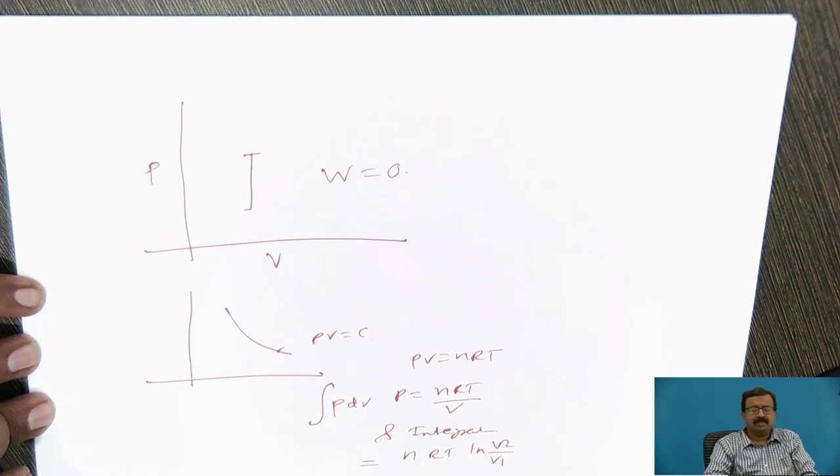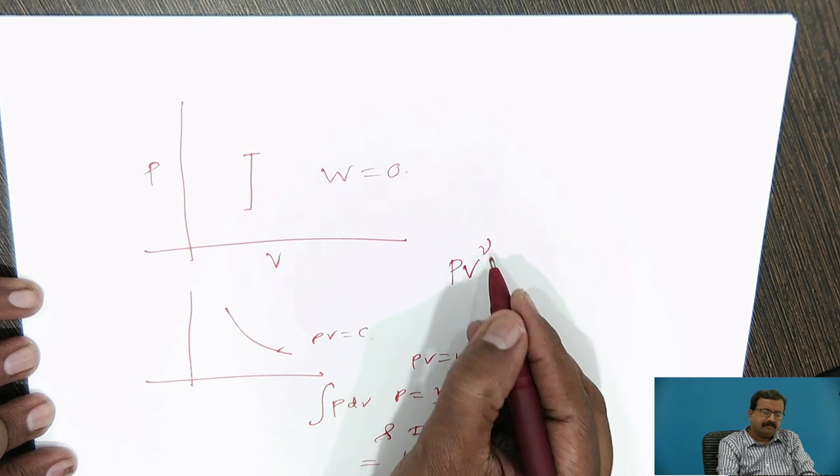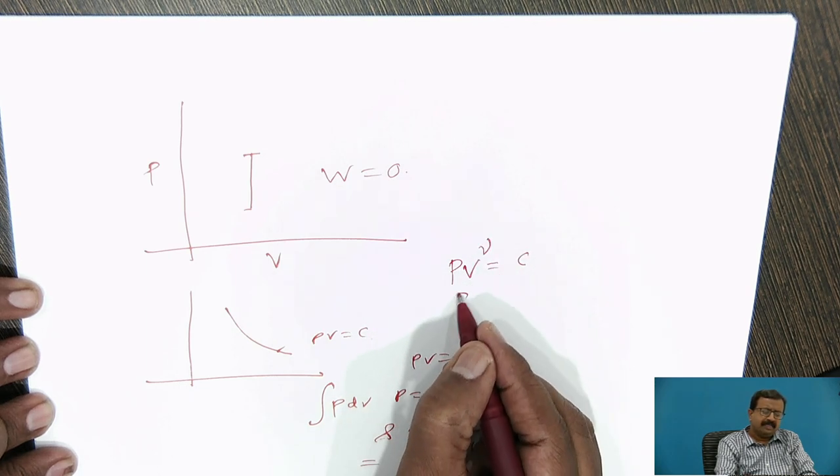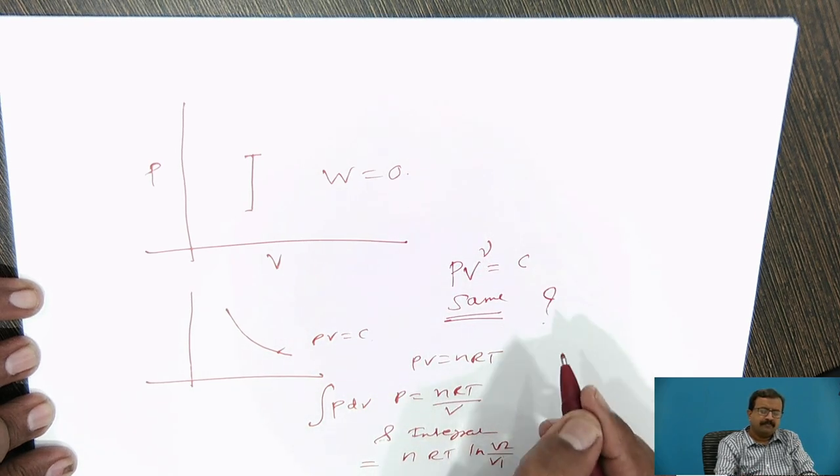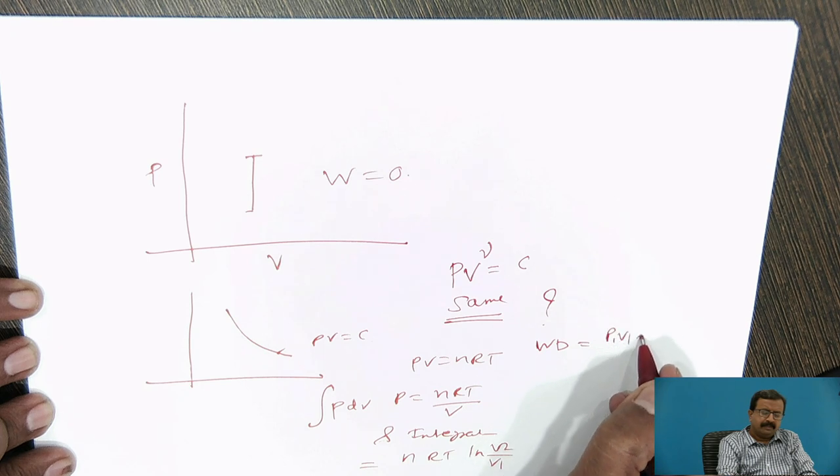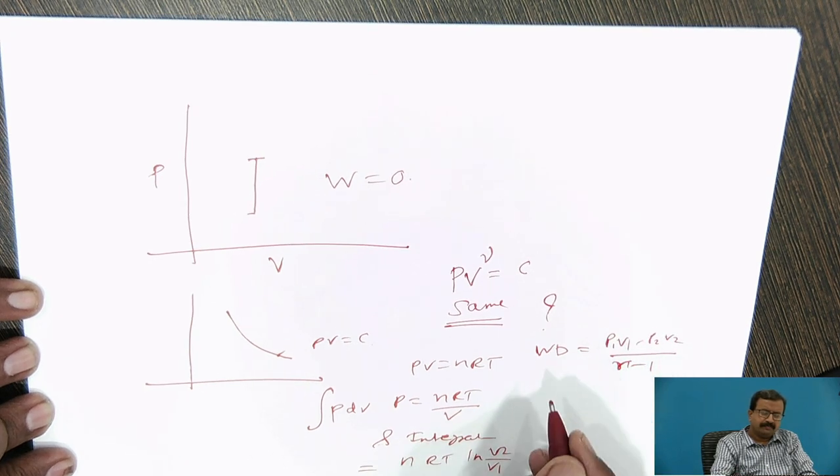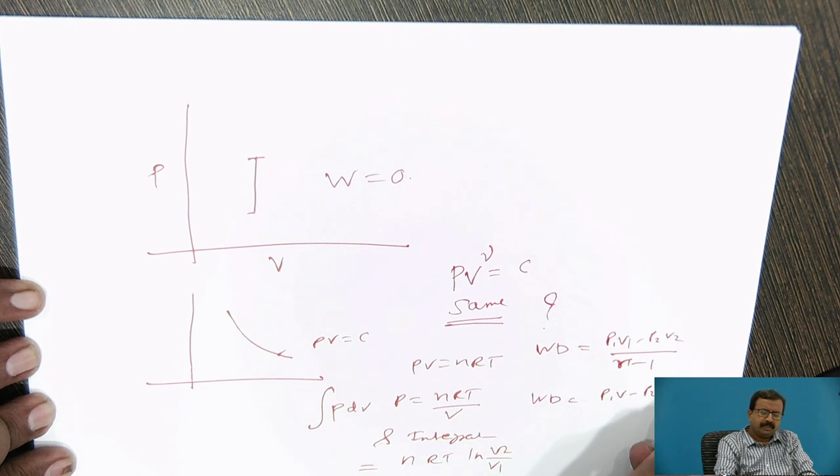If v2 is greater than v1, it is work done. If it is less than, then it is work given to the system. If it is polytropic process or isentropic process, it is p v raised to gamma equals constant, same. Now the task for you, show that work done equals p1 v1 minus p2 v2 upon gamma minus 1, or work done equals p1 v1 minus p2 v2 upon n minus 1.